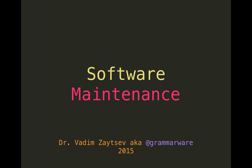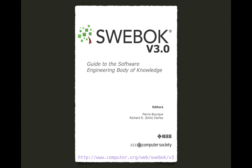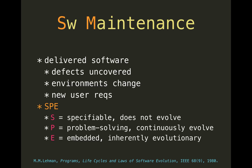Software maintenance is the fifth topic of the software engineering body of knowledge and it revolves around delivered software or software that is being delivered. It's about uncovering new defects, changes in the environments — organizational or technical — embracing new user changes and whatnot.